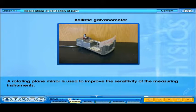A rotating plane mirror is used to improve the sensitivity of measuring instruments. This is an example of a ballistic galvanometer.